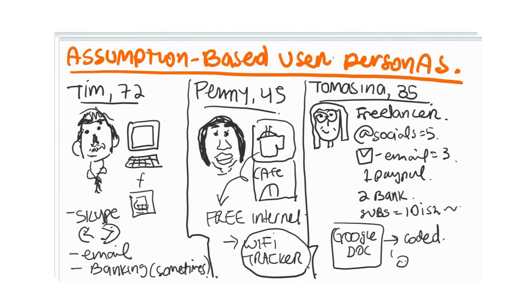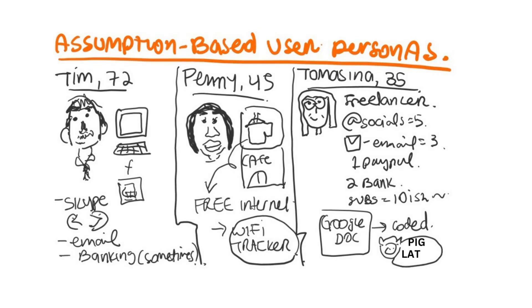My third assumption-based persona is Tomasina. She is in her mid-30s, a freelancer who works from home. She has five different social media accounts and at least 10 different subscription services. She can't exactly remember them all but believes they are all necessary. She has three email accounts, one PayPal account, two bank accounts, and she often forgets her passwords. She's also distrusting of using a physical notebook to write down passwords — instead, she has a Google Doc where she keeps track of her passwords written in Pig Latin.